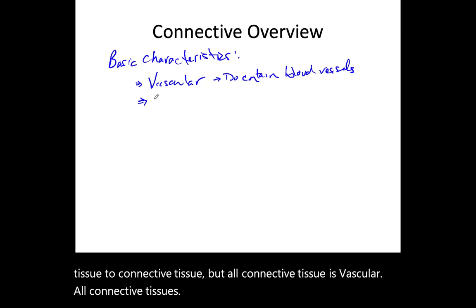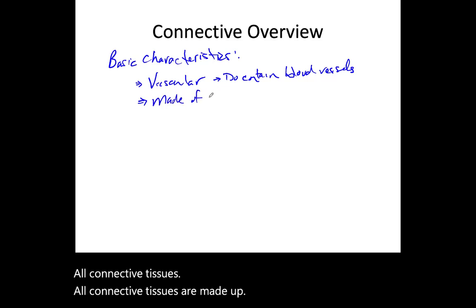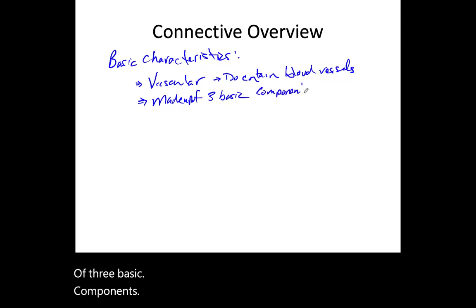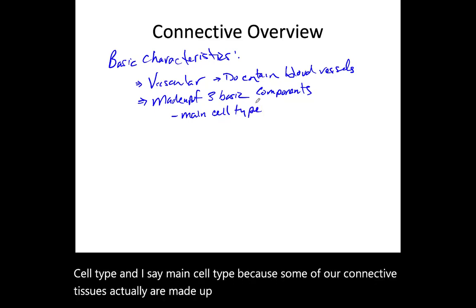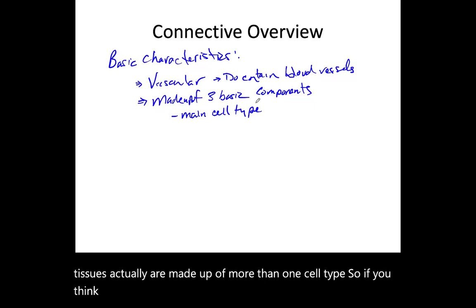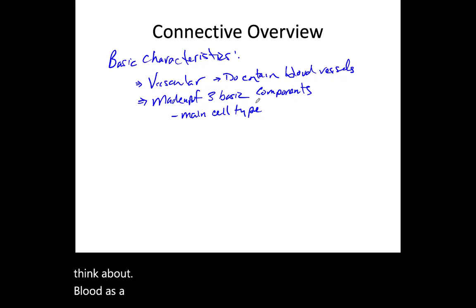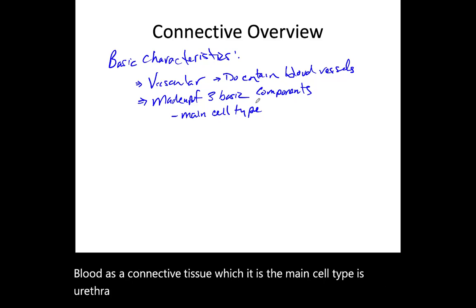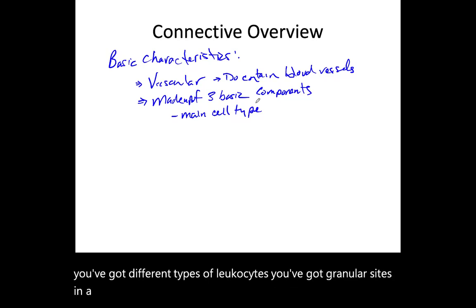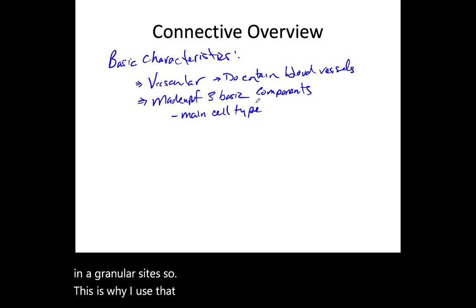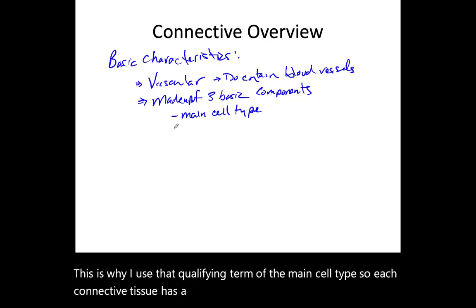All connective tissues are made up of three basic components. They all have a main cell type — and I say main cell type because some connective tissues are made up of more than one cell type. If you think about blood as a connective tissue, the main cell type is erythrocytes, but there are also leukocytes — granulocytes and agranulocytes. So each connective tissue has a main cell type.